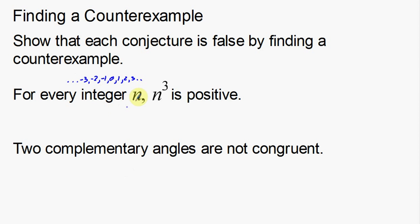So for every integer n — where n represents all these integers — n to the third is positive. So when I take that number and cube it, take it to the third power, it's always going to be positive. That's what this statement says: take any integer, cube it, and it's always going to be positive.